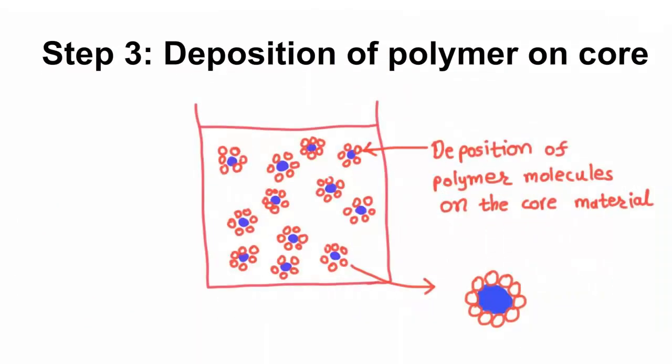Step 3. Deposition of polymer on core. In this step, coasservated polymeric molecules are deposited on the surface of the core material and form a thin film.